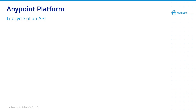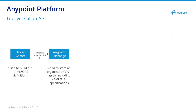It all starts with Design Center, which is used to create the API specification or the contract. API designers will create the API specification by using RAML or OAS as a language. Once you have defined your contract, the next step is to publish it to AnyPoint Exchange, where users can have a look at it, discover and reuse existing assets, and also provide feedback on the specification for future improvements.